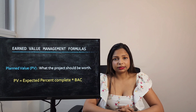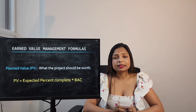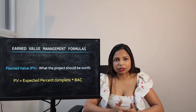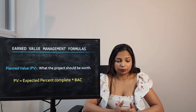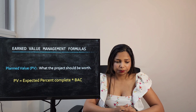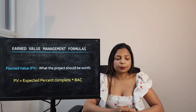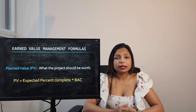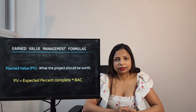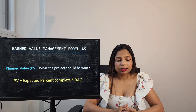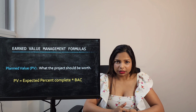The first term in Earned Value Management is Planned Value. This is the approved budget to complete the work that must be finished by a particular time — basically what the project should be worth. The formula to calculate Planned Value is expected percent complete multiplied by BAC, which is Budget at Completion.